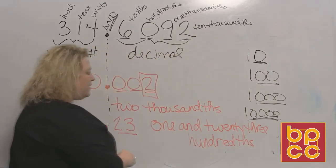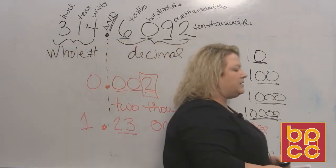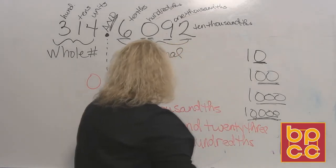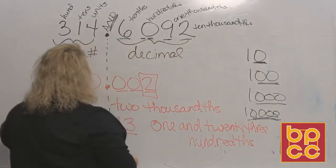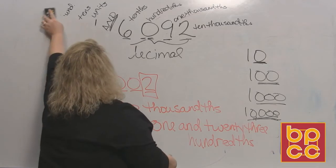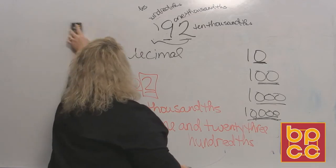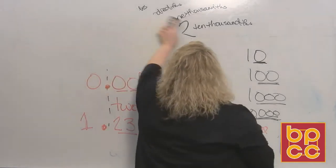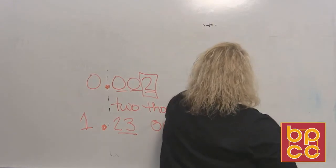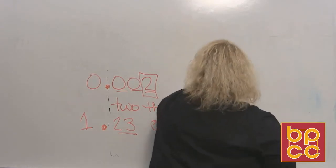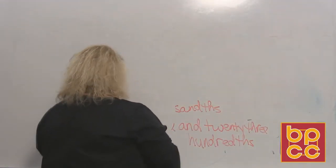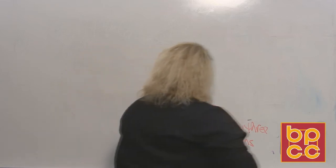So that is how you read and write decimals. The next thing we want to do is — what if I give you the words? Can you turn around and write the digits that represent those words? That's the last thing we're going to do. Let me erase some of this so we have some room.